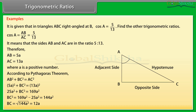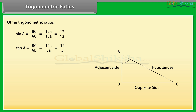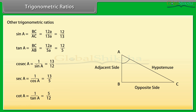By calculating, we get BC equals square root of 144a², which is 12a. Now let us find the values of the other trigonometric ratios. Sin A equals BC upon AC, which equals 12a upon 13a, equal to 12 upon 13. Tan A equals BC upon AB, which equals 12a upon 5a, equal to 12 upon 5. Cosec A equals 1 upon sin A, which is 13 upon 12. Sec A equals 1 upon cos A, which is 13 upon 5. Cot A equals 1 upon tan A, which is 5 upon 12.